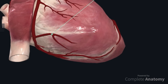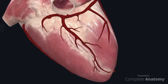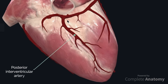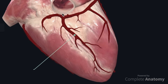As we continue towards the posterior surface of the heart, another large branch will arise, and this is the posterior interventricular artery, which will run within the interventricular groove. This branch will continue towards the apex of the heart where it may anastomose with the anterior interventricular artery. As the right coronary artery continues, it begins to peter out but may anastomose with the left circumflex artery.